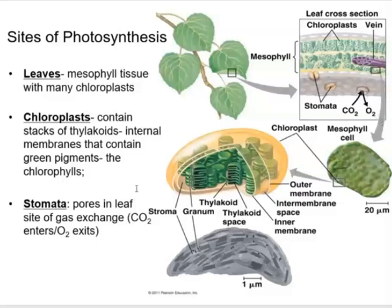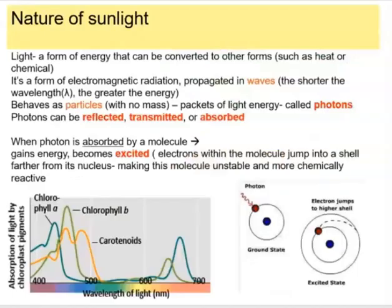If you look at one individual chloroplast, you'll see it has a double membrane and stacks of membranous structures called thylakoids. Thylakoids are important because within their membranes there will be pigments. Pigments are known to absorb photons — and if they absorb photons, that means they absorb light, and that energy can be converted into chemical energy.